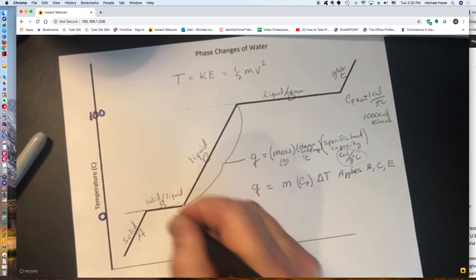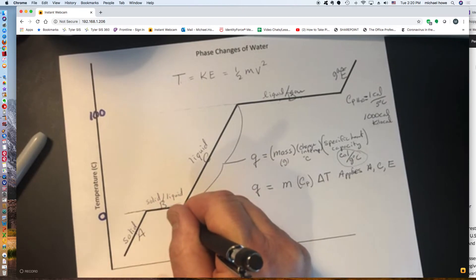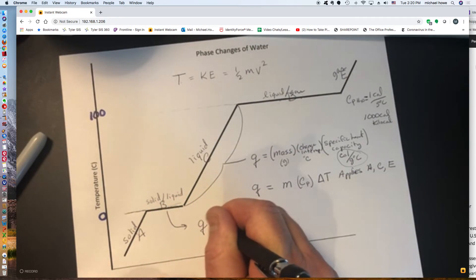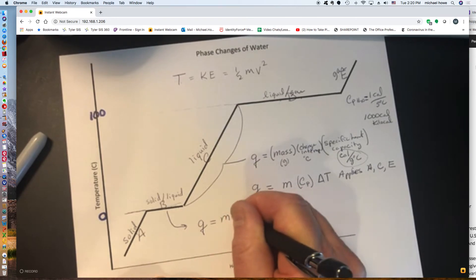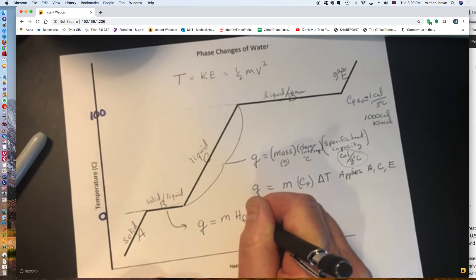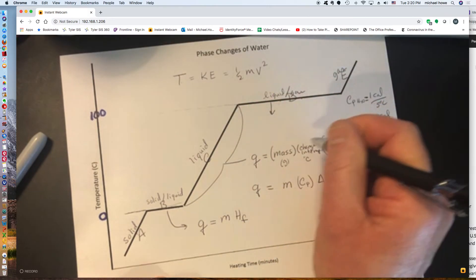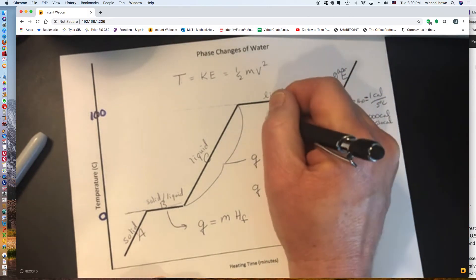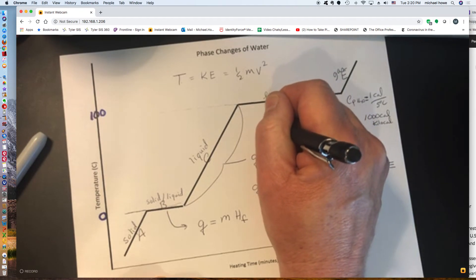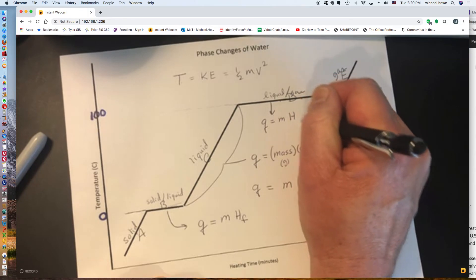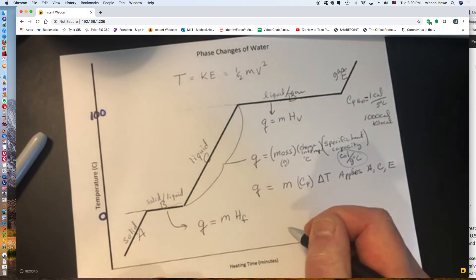All right, so how do we represent the energy change here? We use this formula. The quantity of heat is equal, again, to the mass multiplied by something we call the heat of fusion. And up here, we represent the energy change. The quantity of heat is equal to the mass multiplied by something called the heat of vaporization.